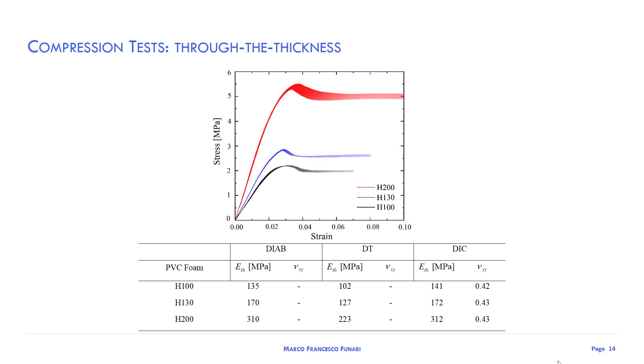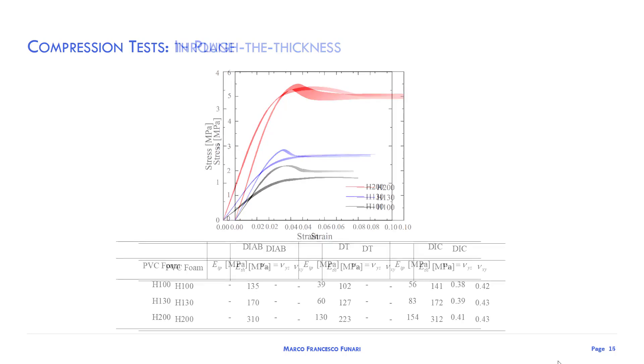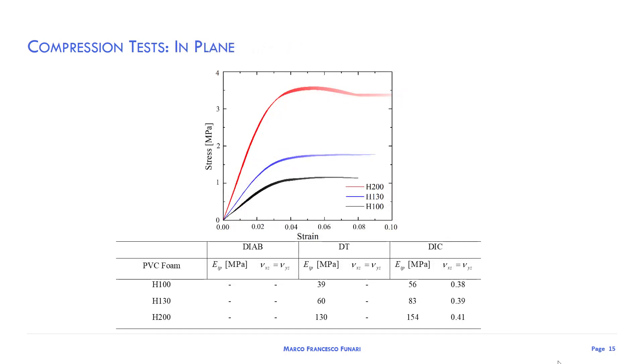I used the previous results to identify the elastic properties of PVC foams. In this slide I have summarized the elastic properties of the three kinds of density topologies investigated for the through-thickness direction. It is clear that the elastic properties improve for denser foams. The same considerations can be done for the in-plane direction. The results also show how the material presents basically a transversally isotropic behavior.